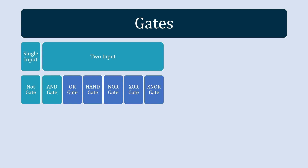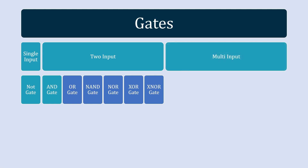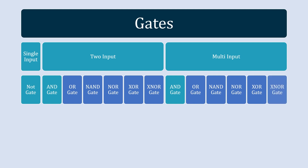You can also find all these gates with multiple inputs — 3 input, 4 input, and more. The third category is multiple input logic gates, and AND gate, OR gate, NAND gate, NOR gate, XOR gate, and XNOR gate all have multiple input variants as well.